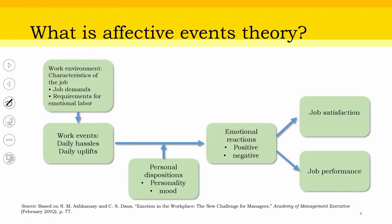Let's understand this affective events theory with the help of the paper by Ashkan and C.S. Doss, entitled 'Emotion in Workplace: A New Challenge for Managers.' When we look into affective events theory, they address the work environment first. The prime important characteristic of the work environment is the characteristics of the job — specifically the job demands as well as the requirement for emotional labor, which we discussed in detail in the previous lecture.